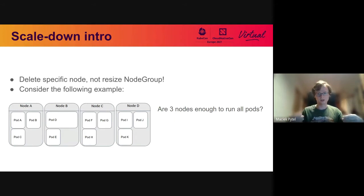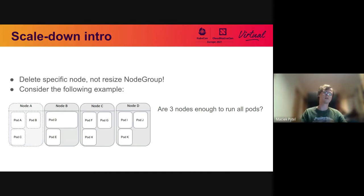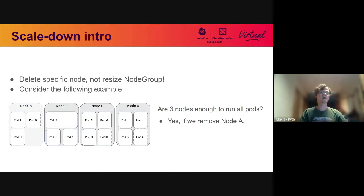The wider pod would request more memory and the node would have finite resources — its height and width represent how many cores and how many gigabytes of memory it has. Initially we have four nodes and the question is whether three nodes would be enough to run all the pods — can we remove one node? To answer that, I'll try to remove one node and simulate what the scheduler would do to see if all pods could still schedule in the smaller cluster. Starting with node A, after simulated scheduling every pod previously on node A could run on some other node. So yes, three nodes are enough if we remove node A.